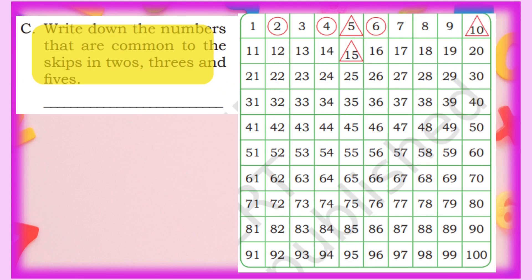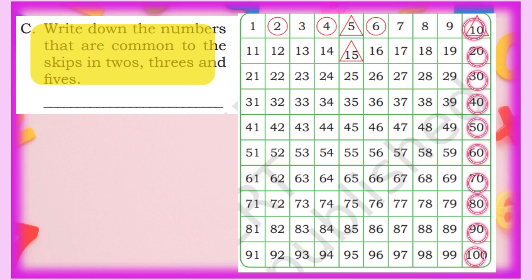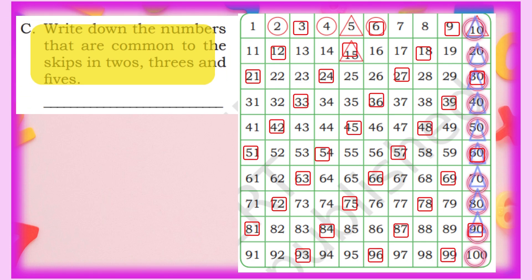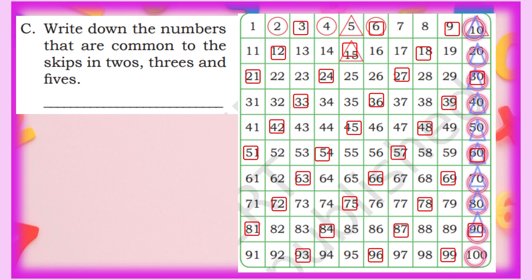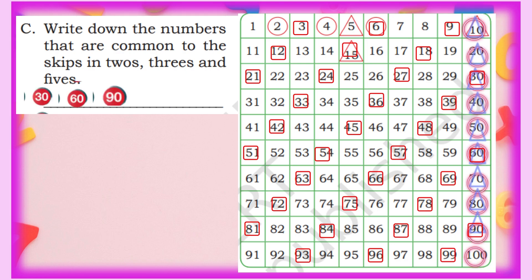Next question: write down the numbers common to skips in 2s, 3s, and 5s. We already have circles for 2s and triangles for 5s. Now for 3s, we draw a square — on 3, 6, 9, 12, 15, 18, 21, 24, 27, 30, 33, 36, 39, 42, 45, 48, and so on every third digit. We need numbers with all three: circle, triangle, and square. Since circles and triangles only coincide in the last column, we check where squares also appear: 30, 60, and 90. These three numbers have all three shapes.